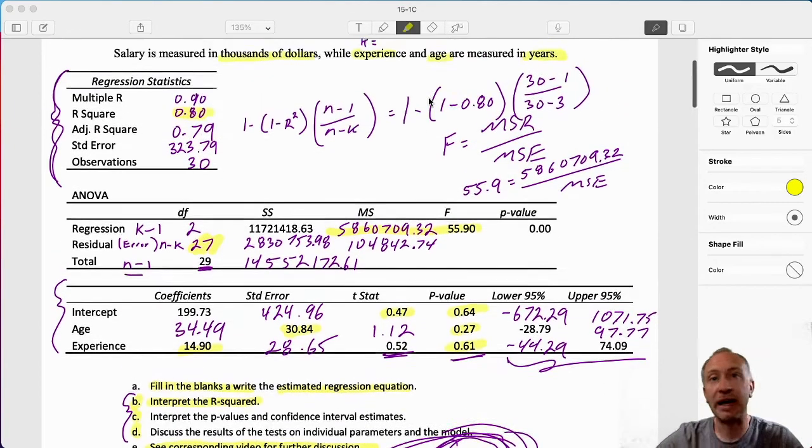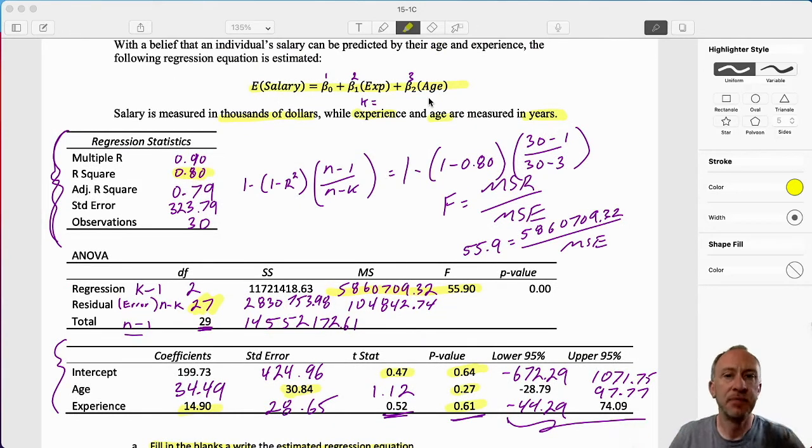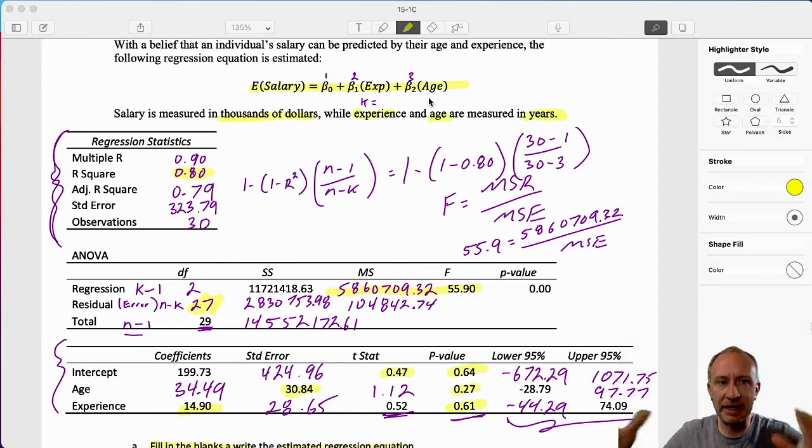So in that first video we went through and we completed this a little bit smaller partial Excel regression output. Again we had a different starting point, a different path to completion.